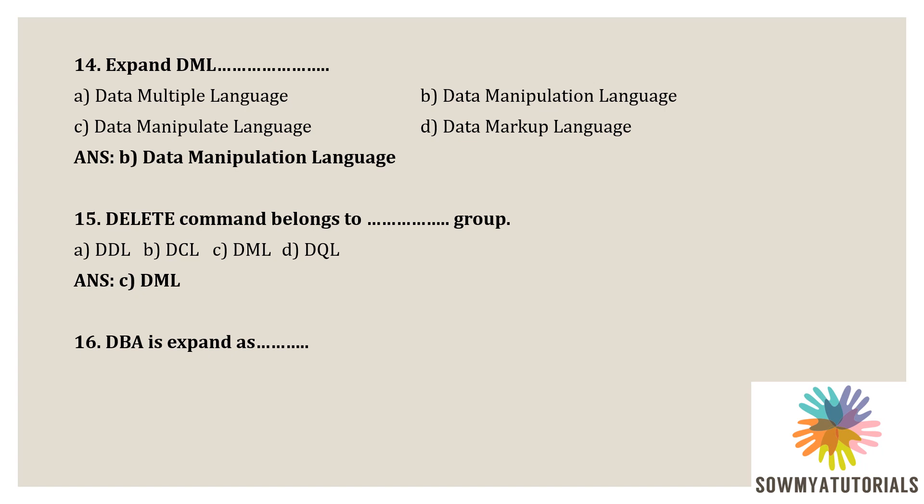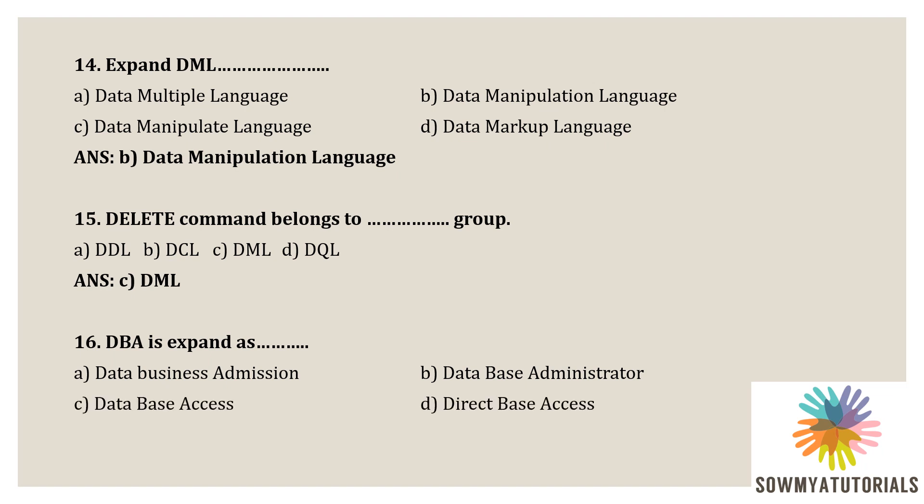Next question: DBA is expanded as — option A, data business admission; option B, database administrator; option C, database access; option D, direct database access. The correct option is option B, database administrator. A database administrator is an individual person responsible for controlling, maintaining, coordinating, and operation of a database management system — managing, securing, and taking care of a database system.